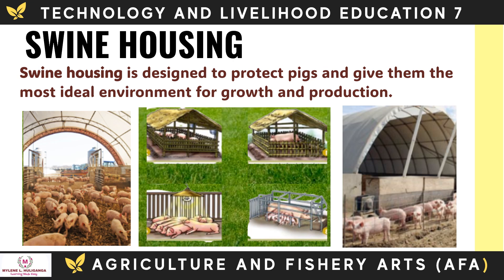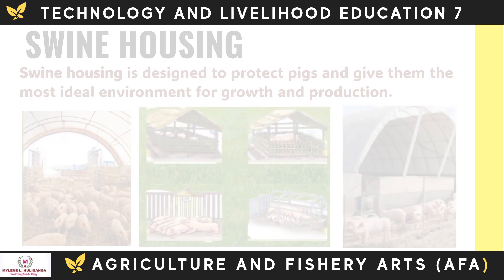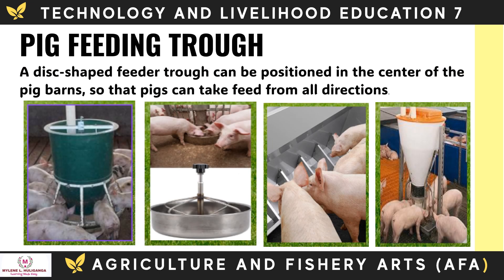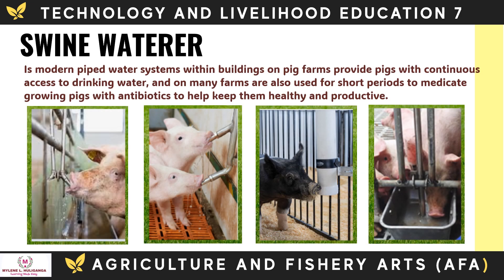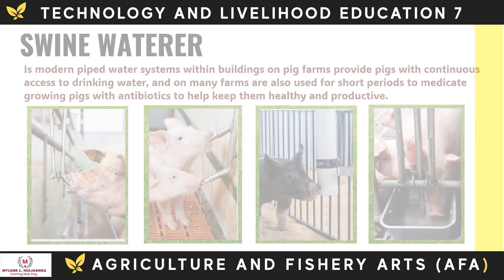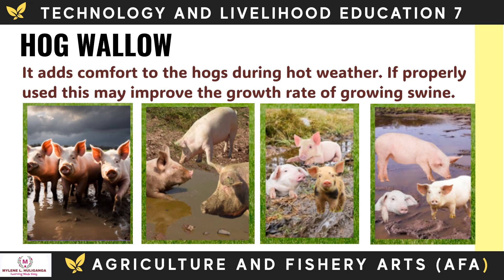The following are the materials and equipment used for raising swine. Swine housing is designed to protect pigs and give them the most ideal environment for growth and production. The pig feeding trough is disc-shaped and can be positioned in the center of the pig barn so that pigs can take feed from all directions. The swine waterer uses modern piped water systems within buildings, providing pigs with continuous access to drinking water, and on many farms is also used to medicate growing pigs with antibiotics to keep them healthy and productive. The hog wallow adds comfort to hogs during hot weather and, if properly used, may improve the growth rate of growing swine.